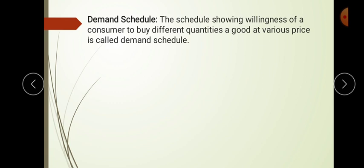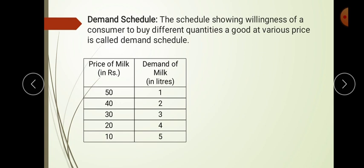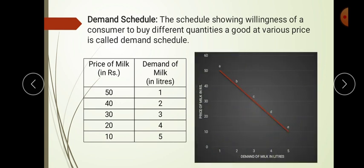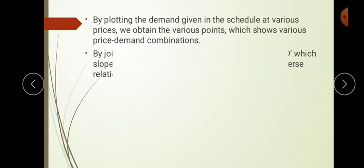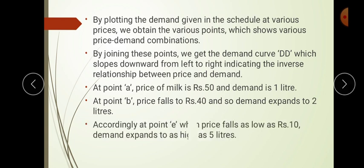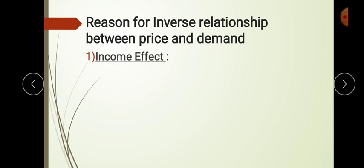A demand schedule is a schedule showing the willingness of a consumer to buy different quantities at different prices — it shows combinations of different price tags with different quantities demanded. If asked for two marks, write the meaning and show an example. A demand curve is a graphical representation of the demand schedule — a curve showing the demand for a good at different prices. It is also called a demand curve. Price of related goods consists of substitute goods and complementary goods.